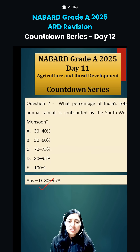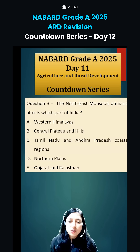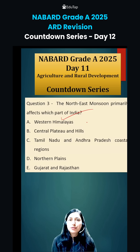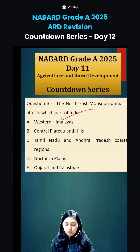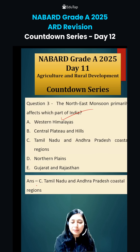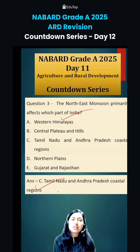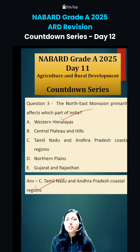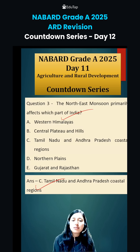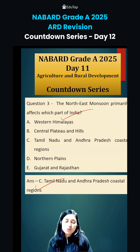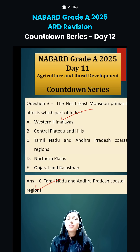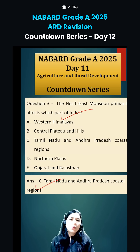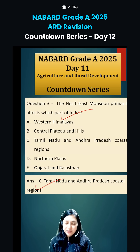The third question was: the northeast monsoon primarily affects which part of our country? The answer for this question is Tamil Nadu and Andhra Pradesh coastal regions. After the offset of the southwest monsoon, there will be the onset of the northeast monsoon, and it does not enter the entire country — rather, it affects only a few parts.